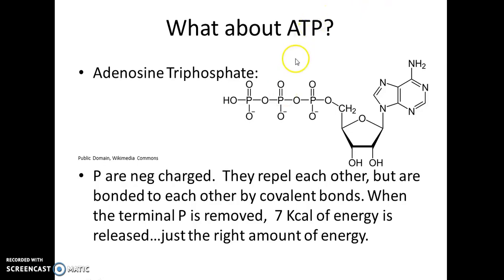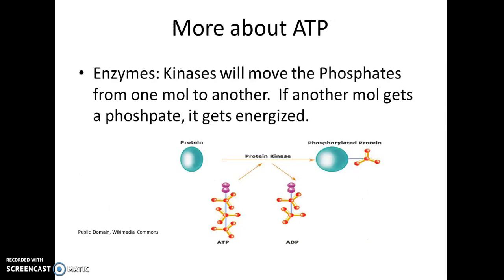It's like a really bad relationship — they want to repel each other, but they're stuck together and have so much energy. Kinases are enzymes that move phosphates from one molecule to another. If a molecule gets a phosphate, two things happen: it changes its shape — and you know that shape is everything — and it receives energy and becomes energized.